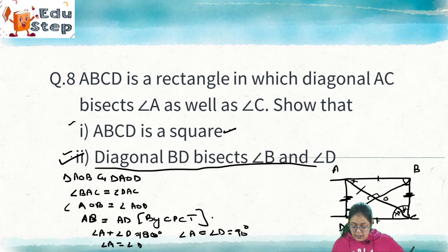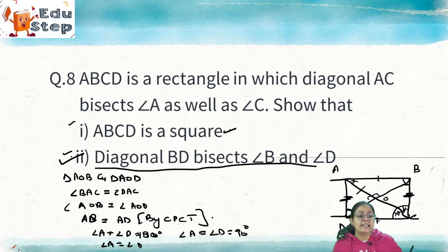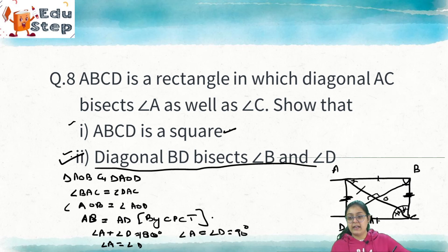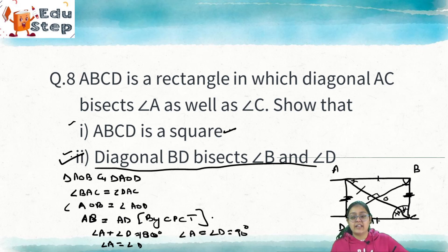We are done with questions 4 to 8. In Part 3 we will discuss the remaining questions. Till then, keep revising. It is very important to know all properties of quadrilaterals — without them you cannot figure out what is given and what to prove. Stay tuned, don't forget to review, share, and subscribe to our channel. Thank you.